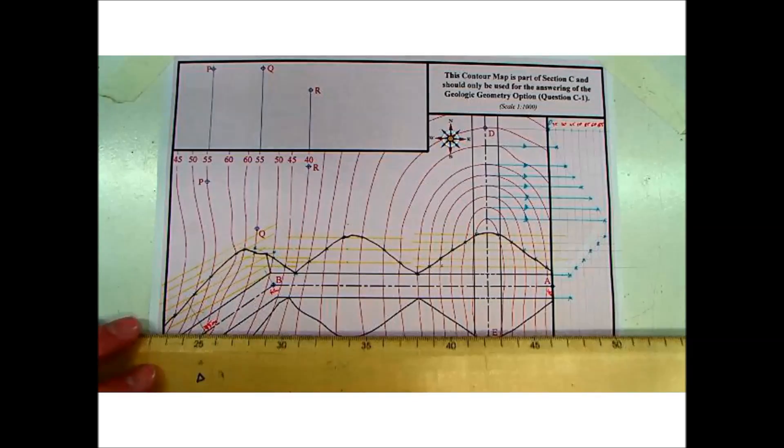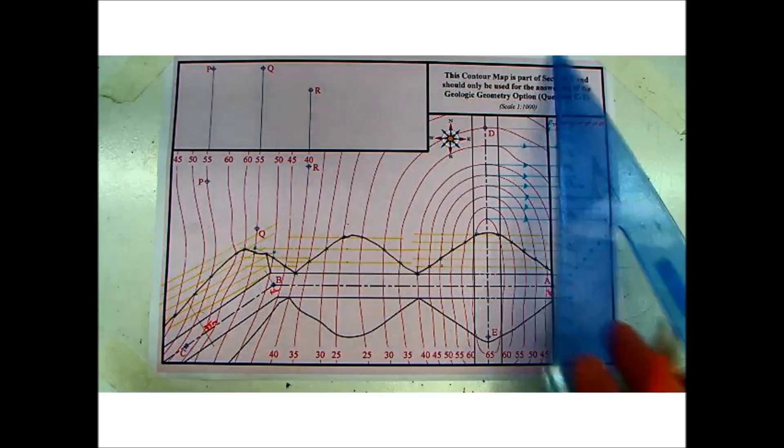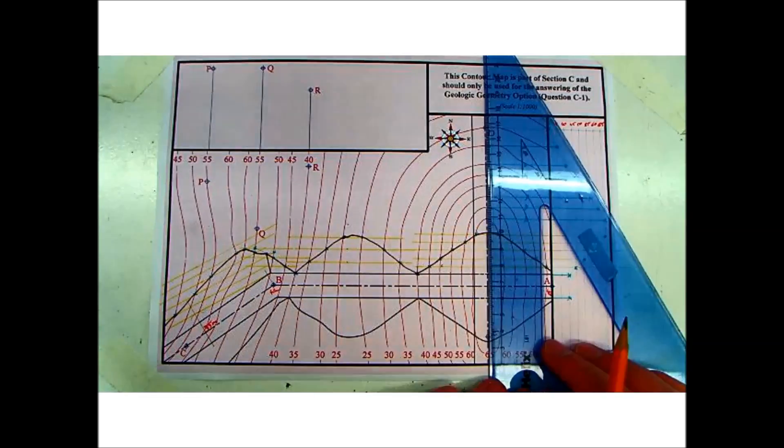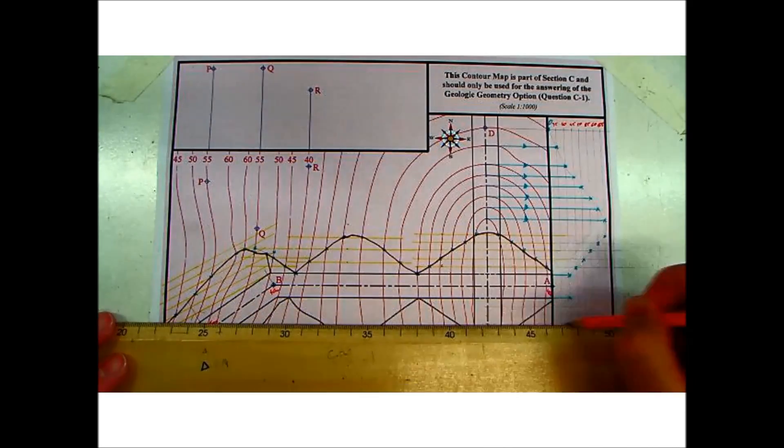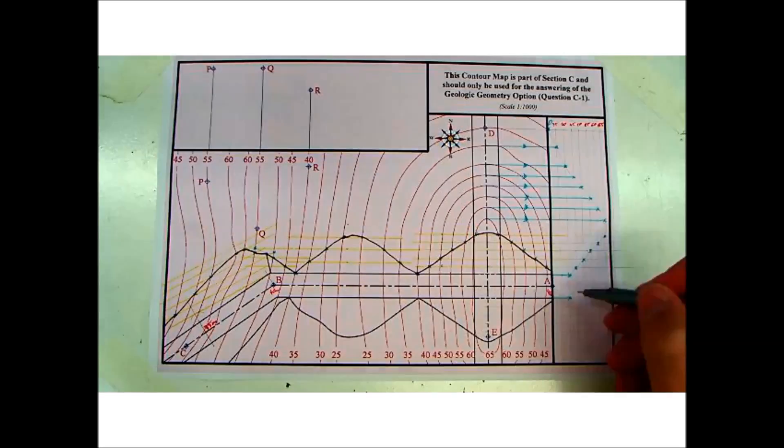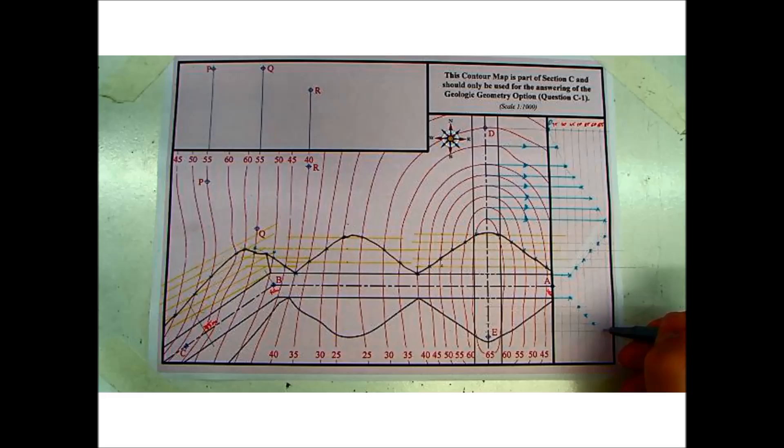Same with the far side, we need to put in those contours because the southern side is done for you. So we'll put those in. Again, we have 45 metres, 50 metres, 55 and 60.